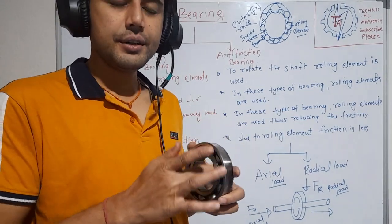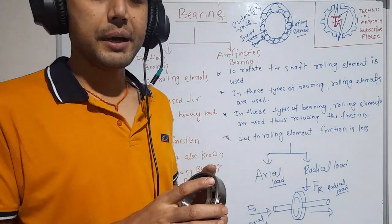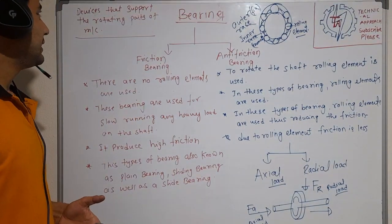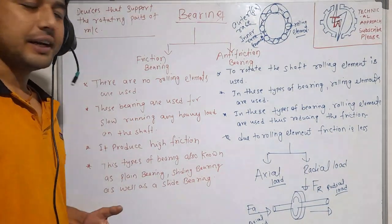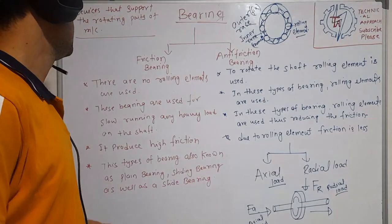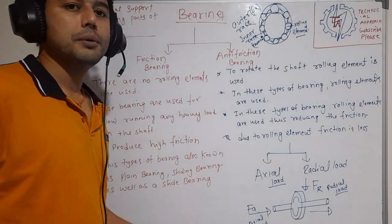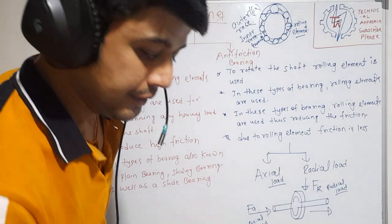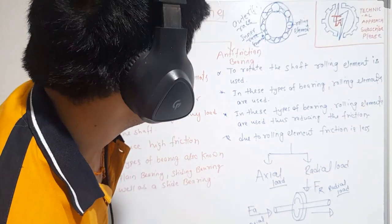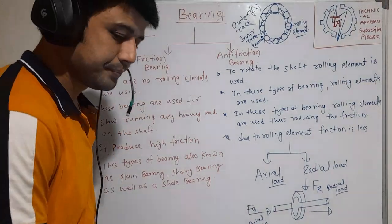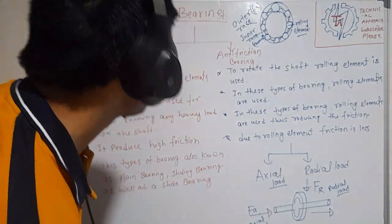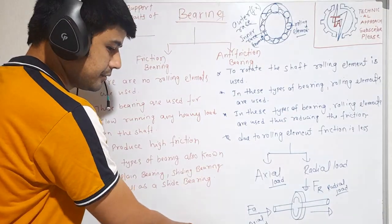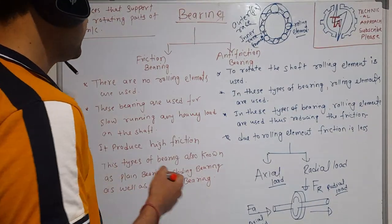The first question: what is the bearing? A bearing is a device that supports the rotating parts of a machine. I have further classified the bearing.